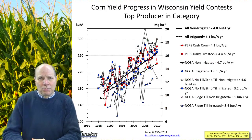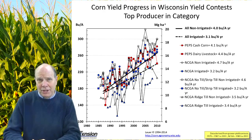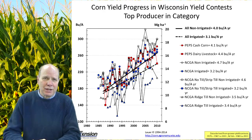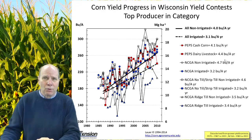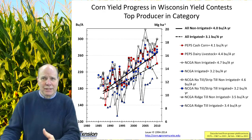To get to this 300 bushel per acre per year goal, one measure is what some of the top producers are doing in Wisconsin. This slide shows the yield increase for various yield contests ongoing in Wisconsin going back to the 1980s — the PEPs contest and the NCGA yield contest. On average, some of these top growers are producing 4 to 4.5 bushels per acre per year within these contests, approaching the goal of 300 bushels per acre.